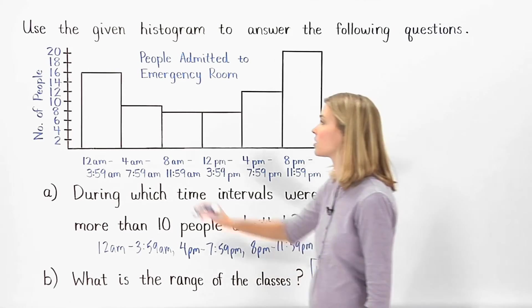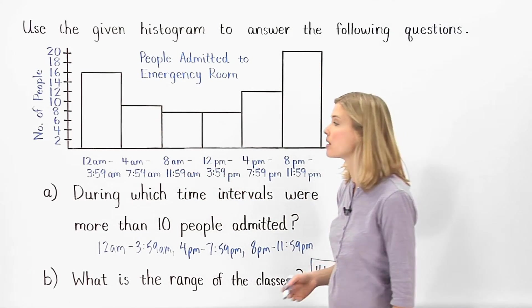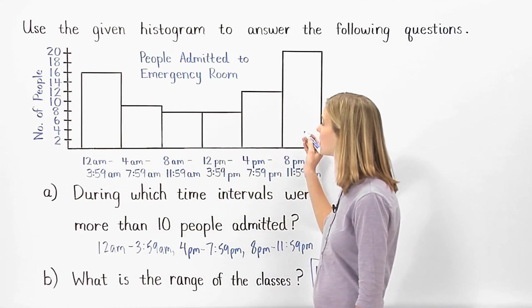Notice that this histogram is U-shaped, which suggests that emergency room visits tend to be more common at night than during the day.